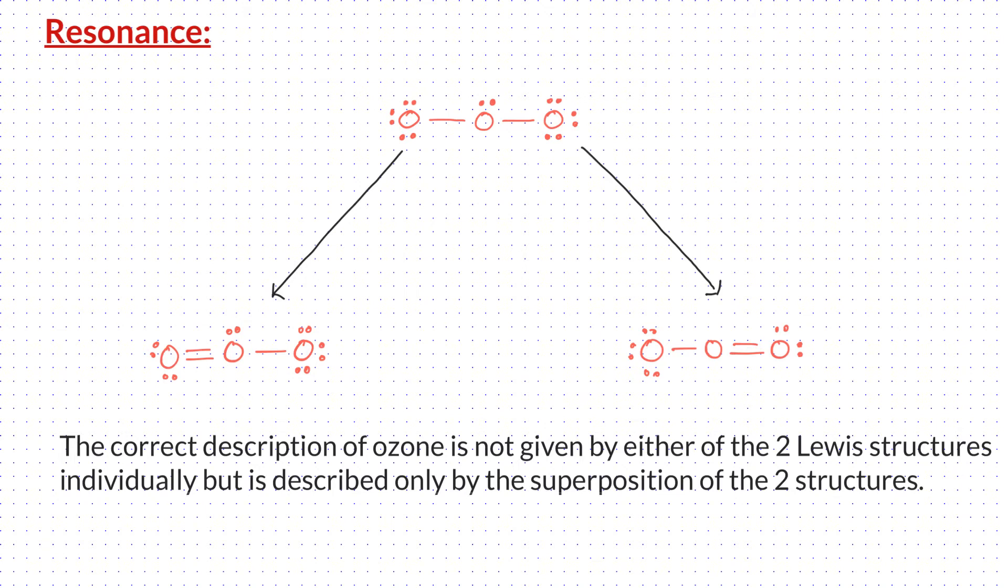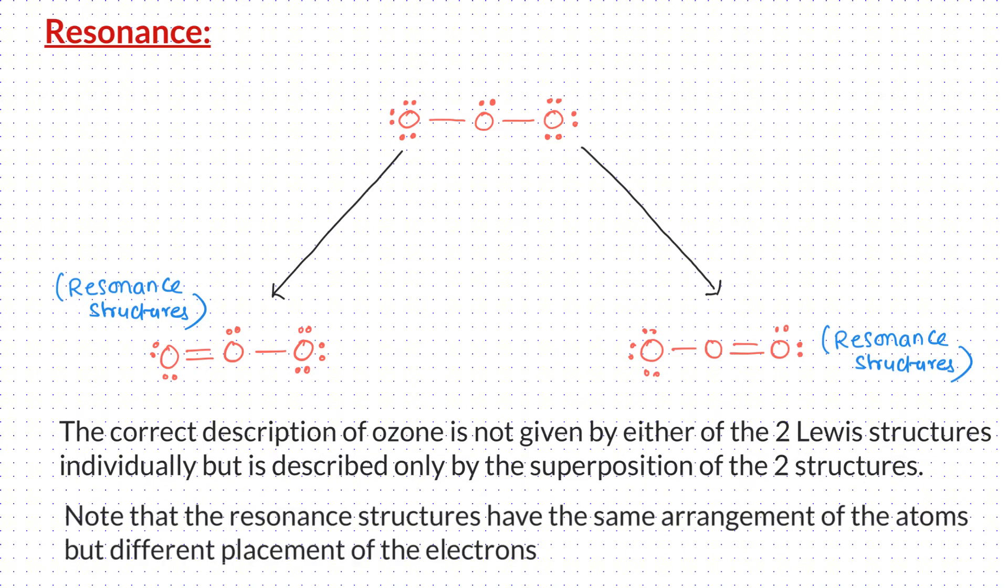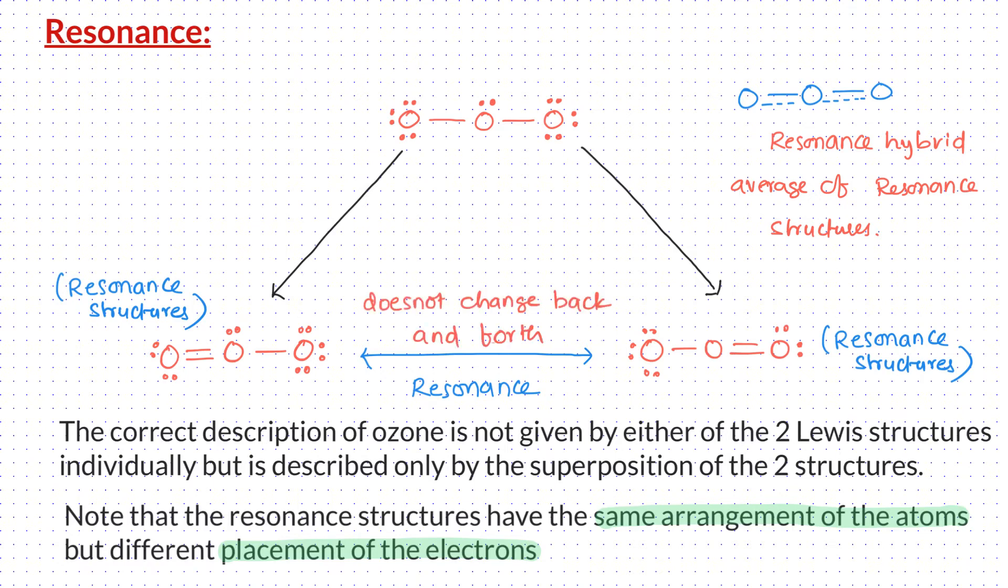The two valid Lewis dot structures are usually referred to as resonance structures. Note that the resonance structures have same arrangement of atoms but different placement of electrons. A double headed arrow is placed between these two structures to show the resonance. And the average structure is called as resonance hybrid. Keep in mind that the ozone does not change back and forth between the two resonance forms.